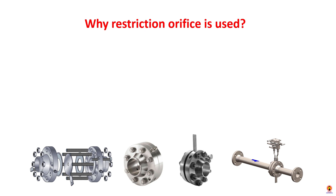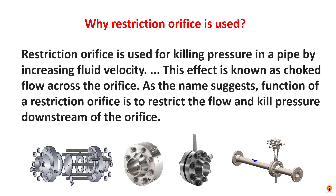Where is a restriction orifice used? A restriction orifice is used for killing pressure in a pipe by increasing fluid velocity. This effect is known as choked flow across the orifice. As the name suggests, the function of the restriction orifice is to restrict the flow and reduce pressure downstream of the orifice.